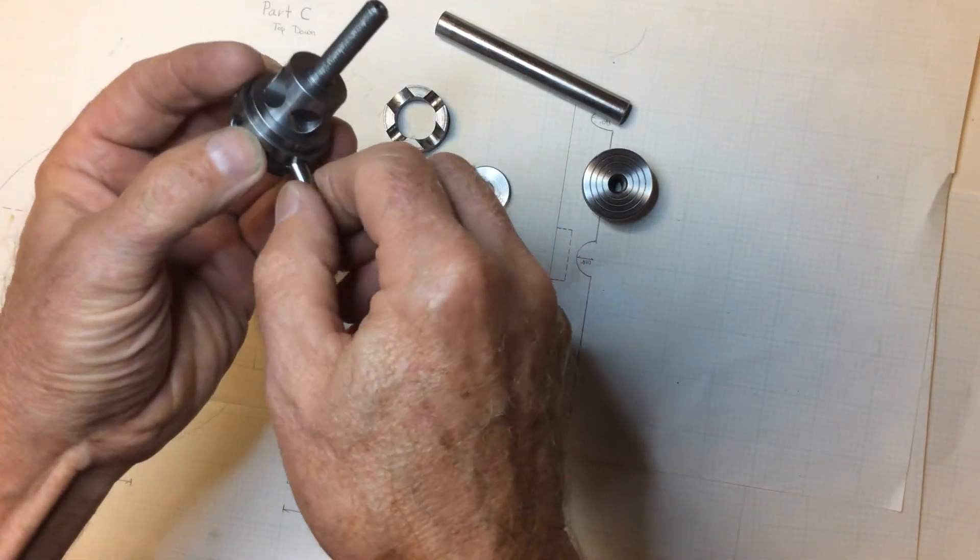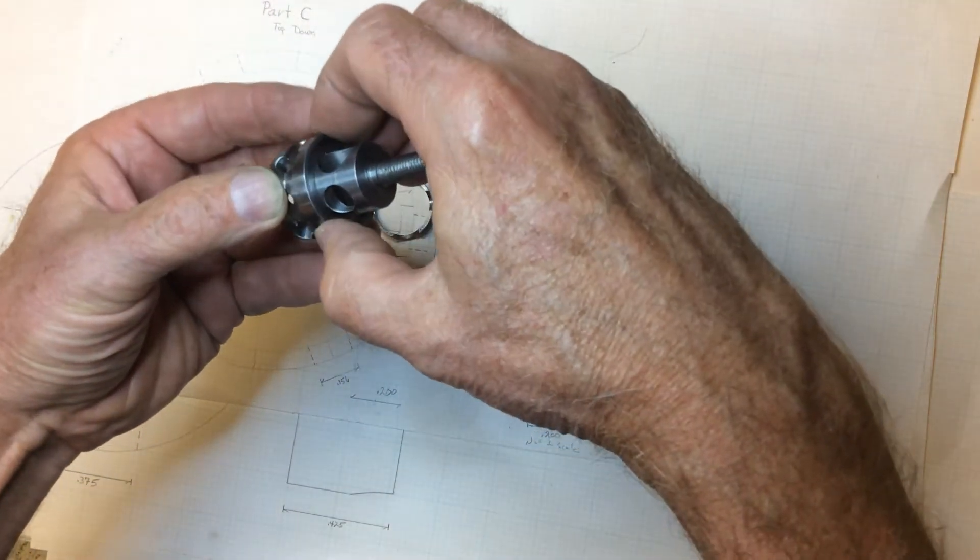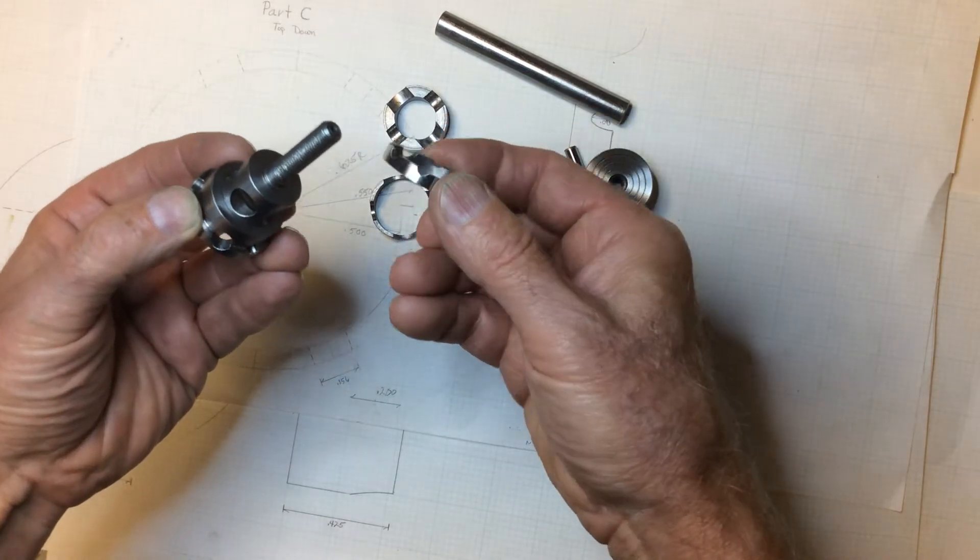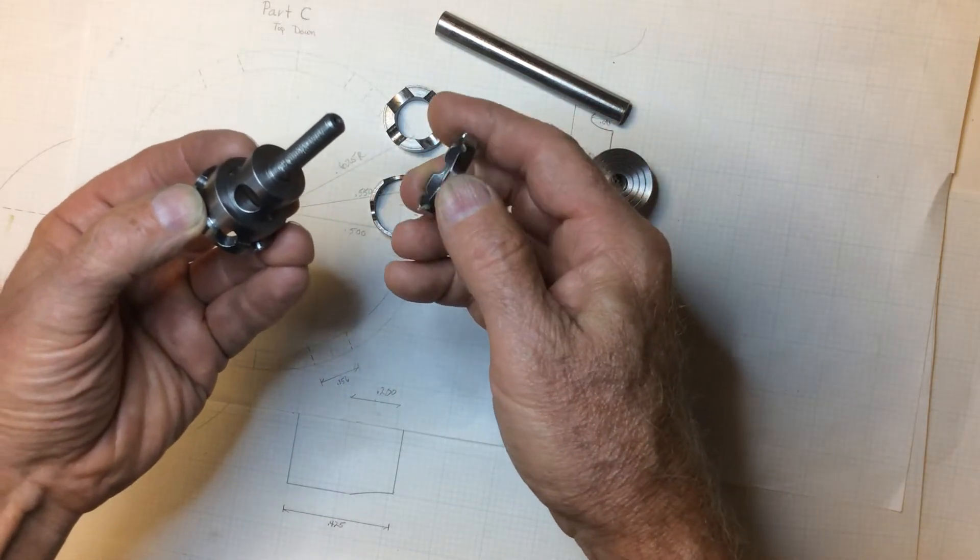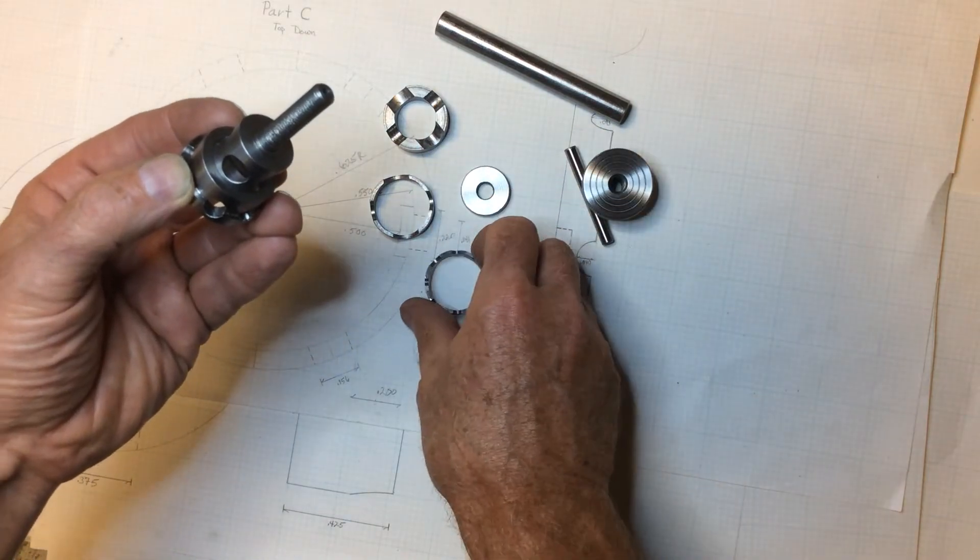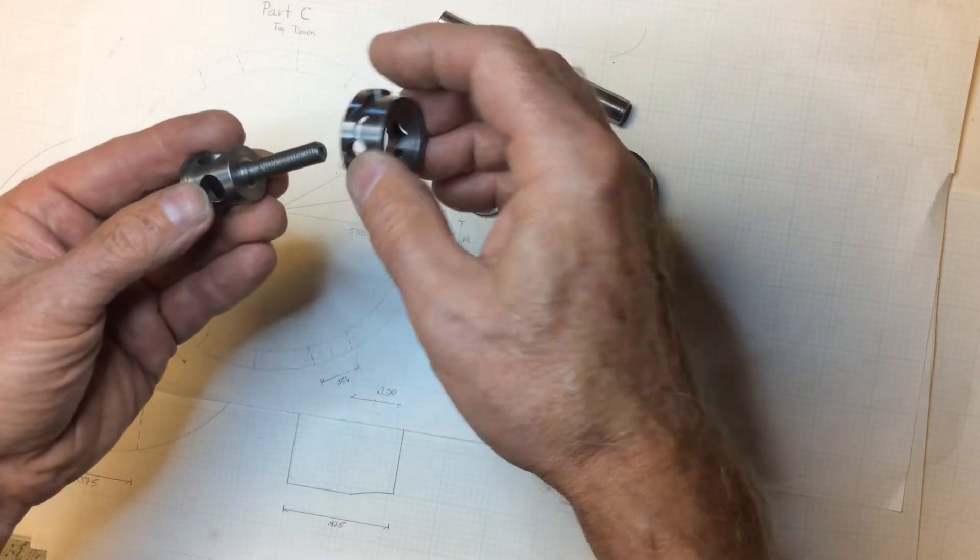Then out comes this quarter inch pin. Off comes this little donut right here with eight holes in it to accommodate four different sizes of rod. Then here's the center portion that comes out of the lowest donut.